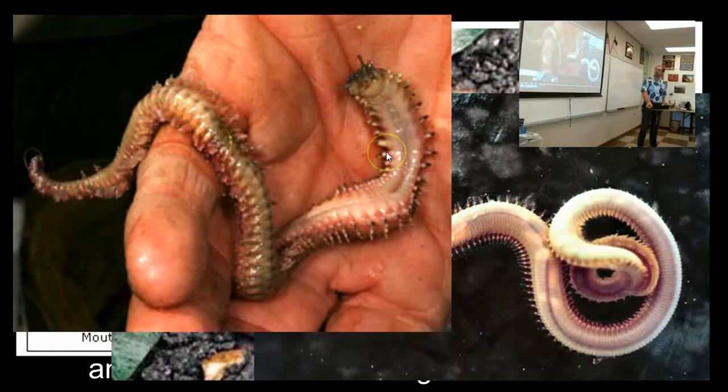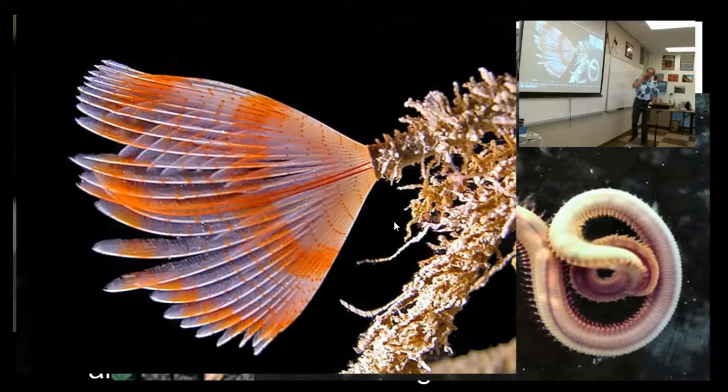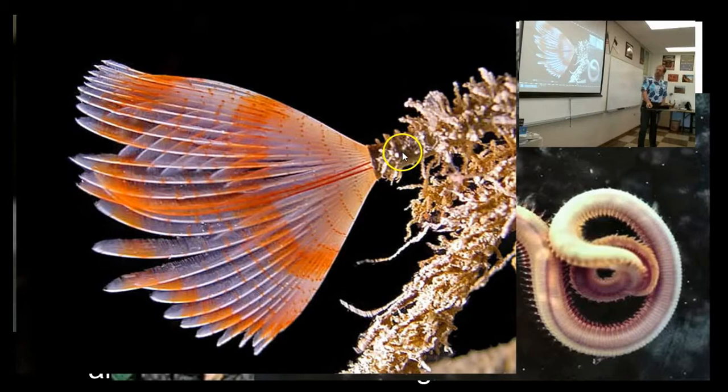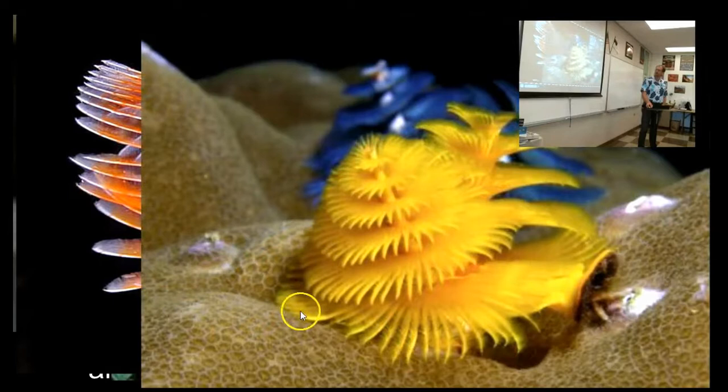These are called polychaete worms. In the ocean there are annelid worms that have really beautiful gills they stick out of their mouth and filter feed using their gills, eating the stuff that gets stuck to them. It looks kind of like a butterfly, but this is the mouth of a worm, with the body of the worm buried down in the coral. This is just the gills coming out of its mouth. Some of them are really beautiful.